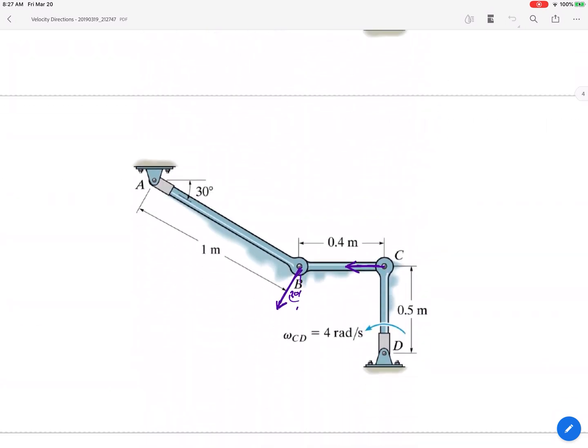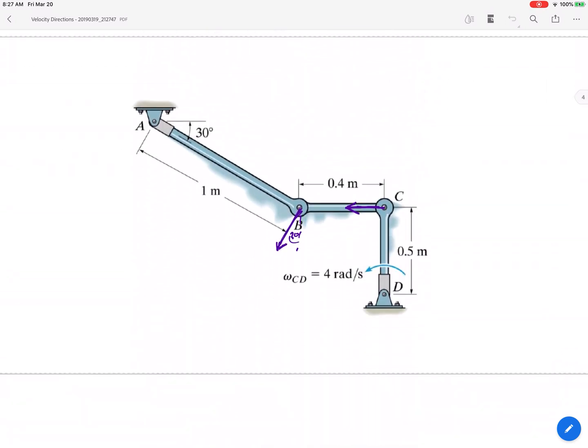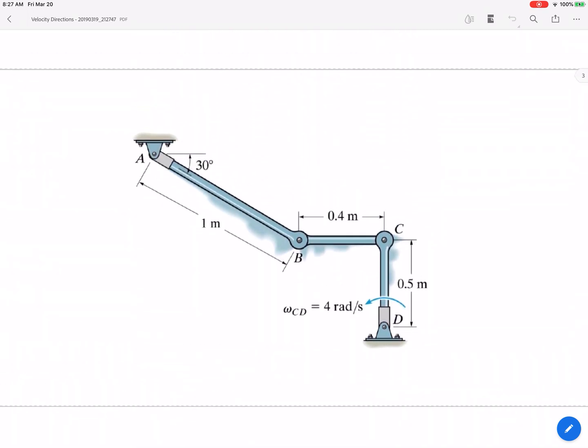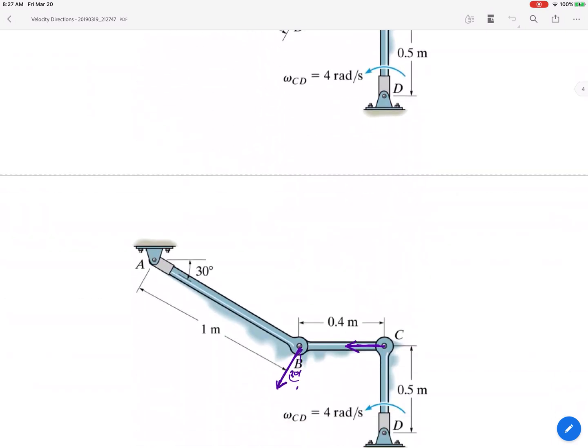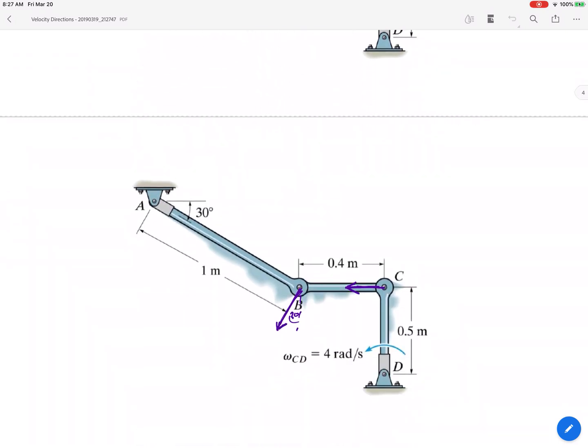But then also I don't know the velocity of point B but I do know its direction. Alright, do you know the direction of velocity of point B? Yeah, it is down at that 30 degree angle. And those directions are not controlled by the middle link, those directions are controlled by the outer links.